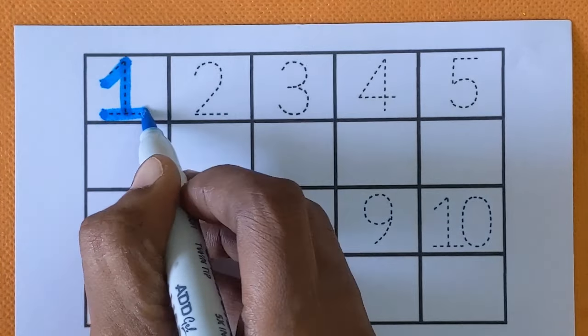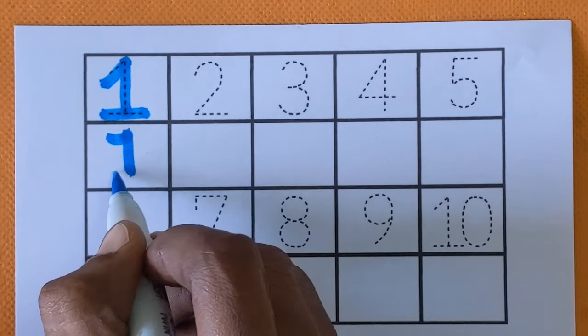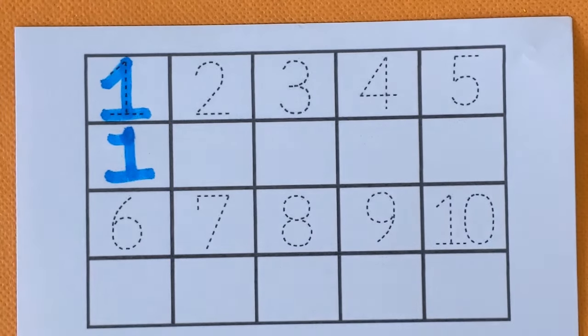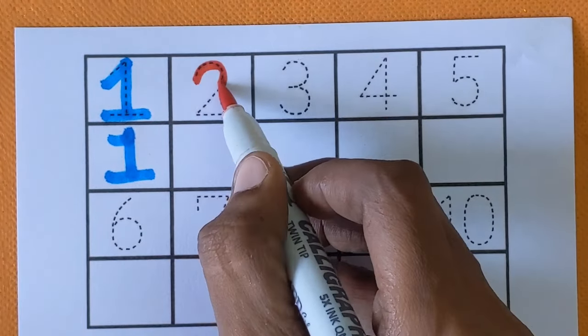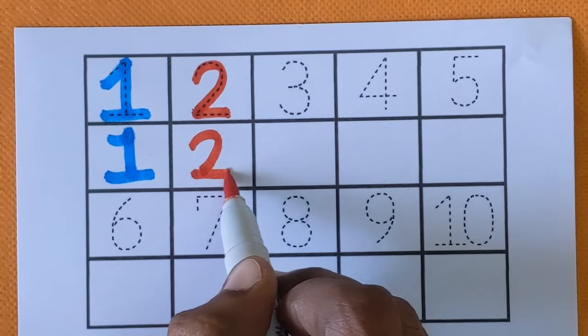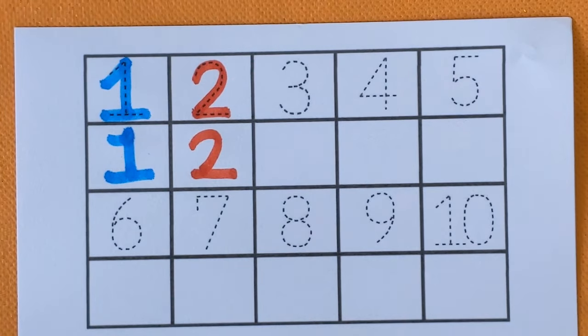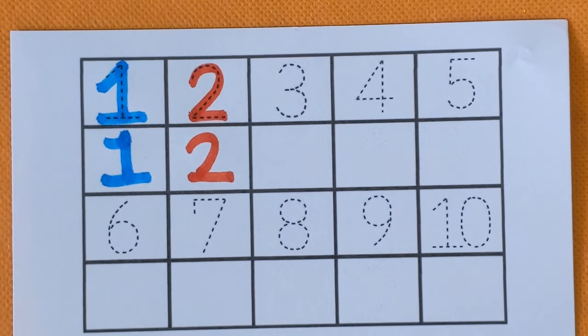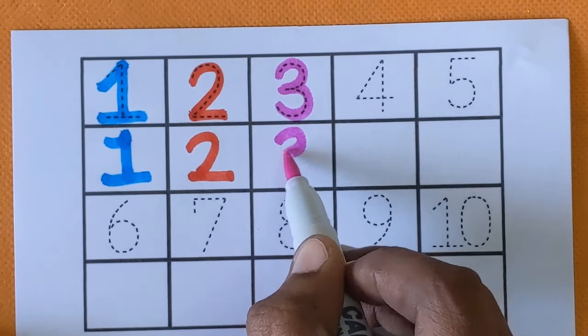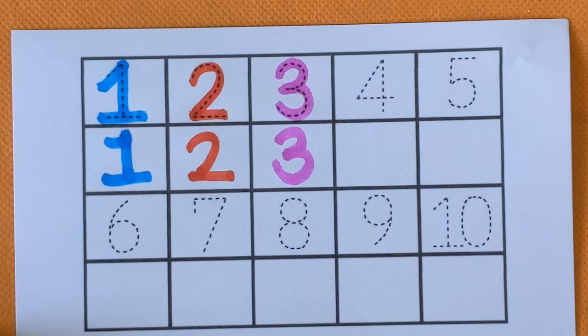Number 1. O-N-E. It's a 1 with a blue color. Next is number 2. T-W-O. 2. It's a red color. After 2, next is number 3. T-H-R-E-E. 3. It's a purple color.